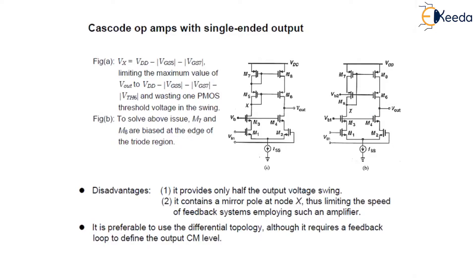As shown in this figure A, it is an example of a PMOS cascode current mirror, which converts a differential current of M3 and M4 to a single-ended output voltage.